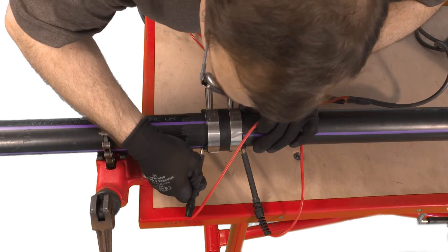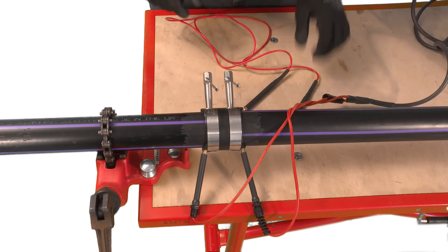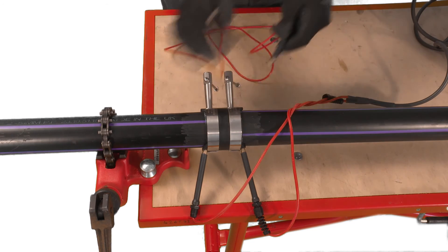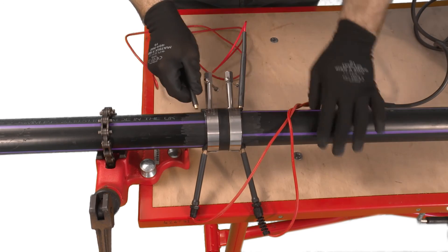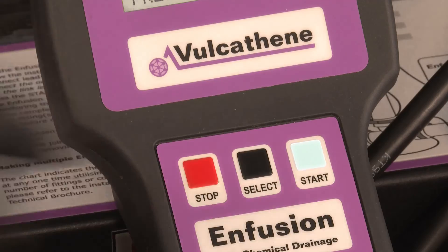Press the start button and the infusion control unit will commence fusion as previously shown. For information regarding the maximum number of joints and connection instructions, consult the Vulcathene technical brochure.